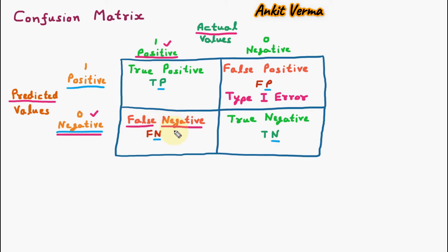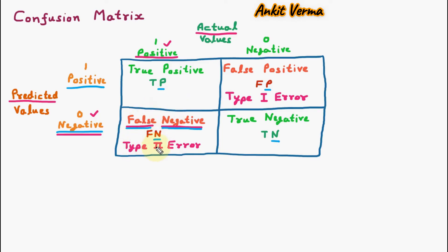False negative is also called type 2 error. This is an error because we predicted somebody is not having a disease, but actually they were having the disease and we did not give them medicine because our prediction was negative — but in the real world they should be treated. There is an easy way to remember type 2 error: false and negative are two negative terms, and these two negative terms make type 2 error. So two negative terms means type 2 error.